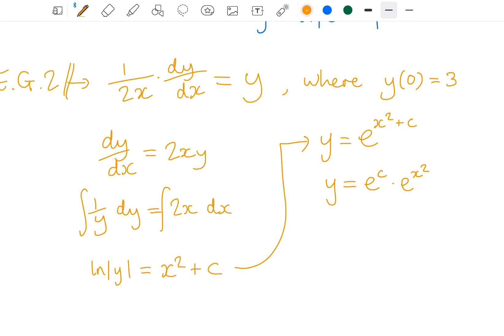And e to the power of c, c is just a constant, a number, and e is as well. So e to the power of c is actually just one single number overall. So I might just call that a new constant by itself, a, let's say.